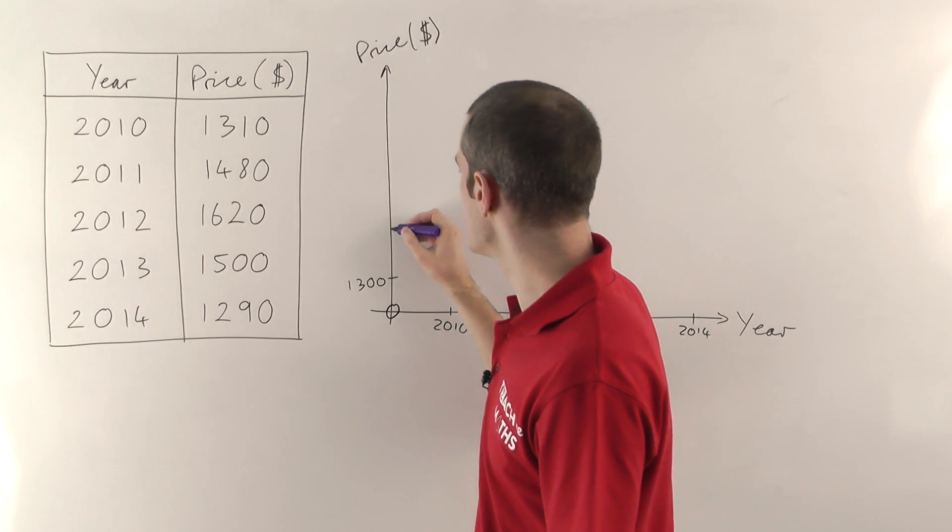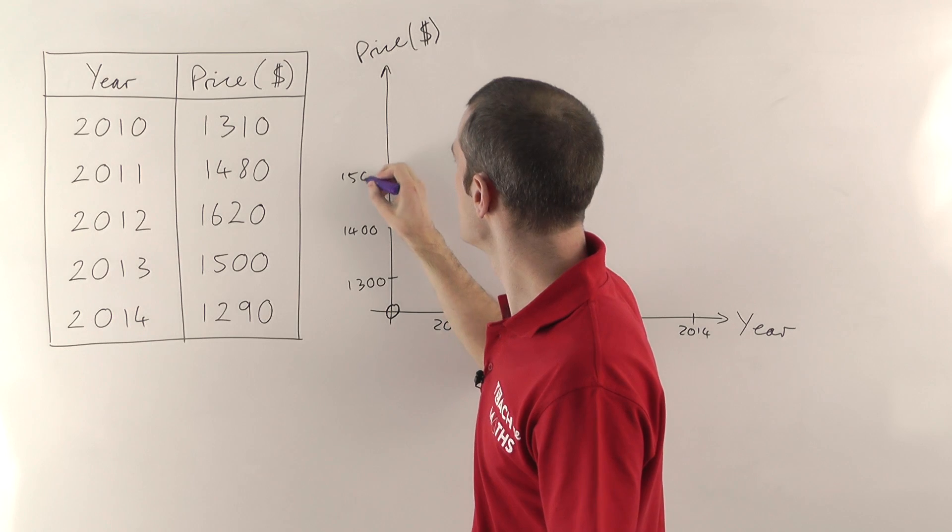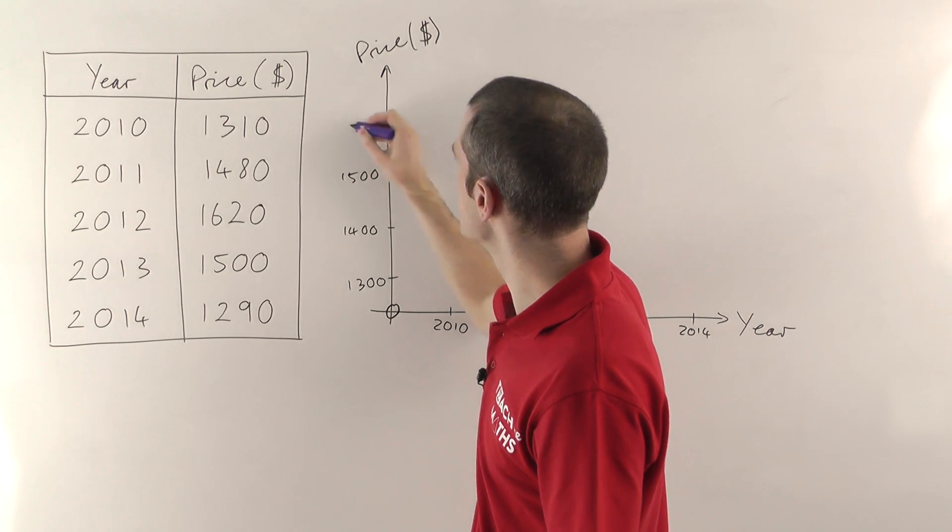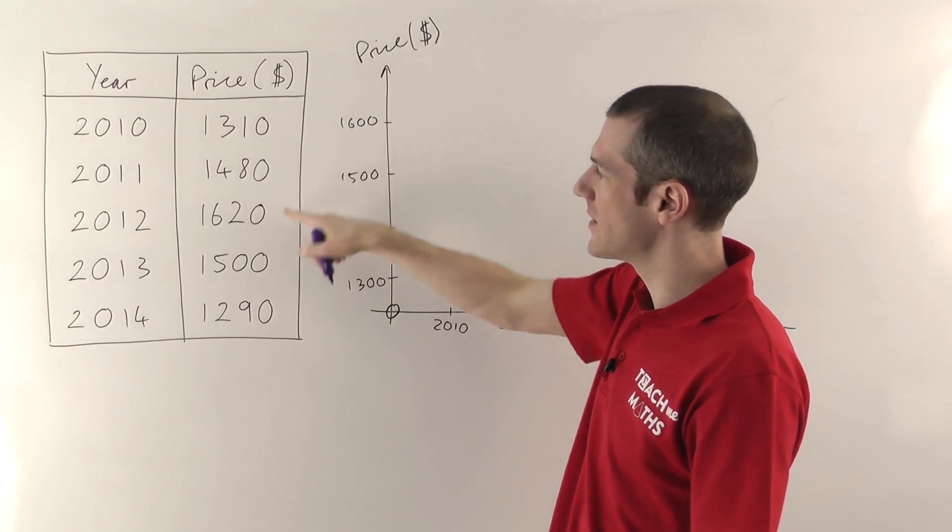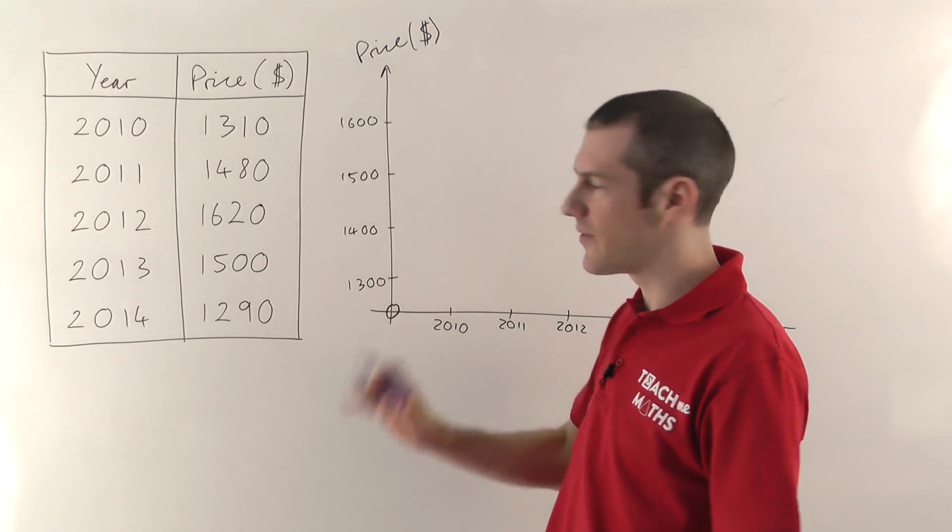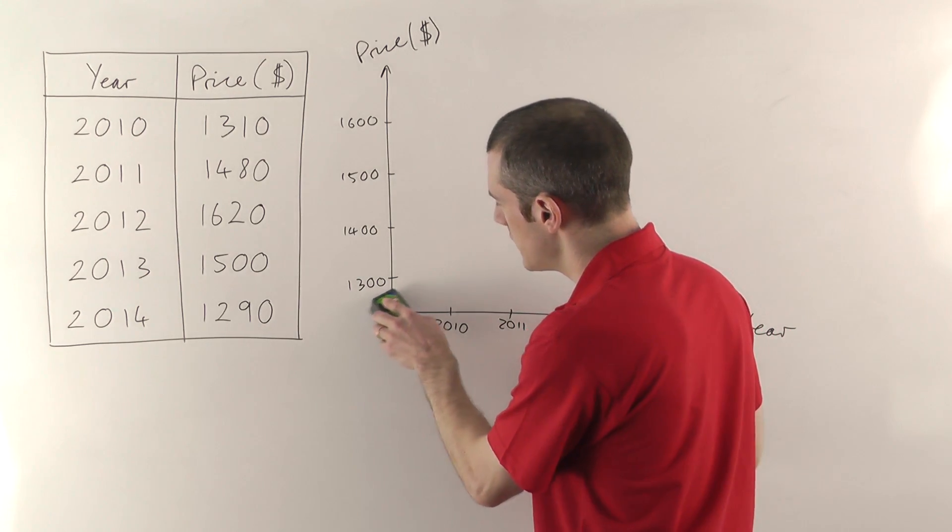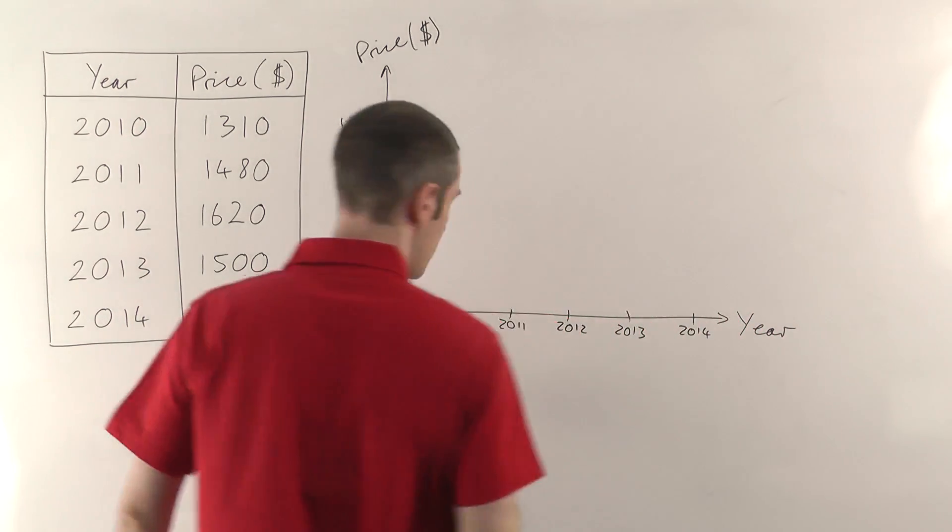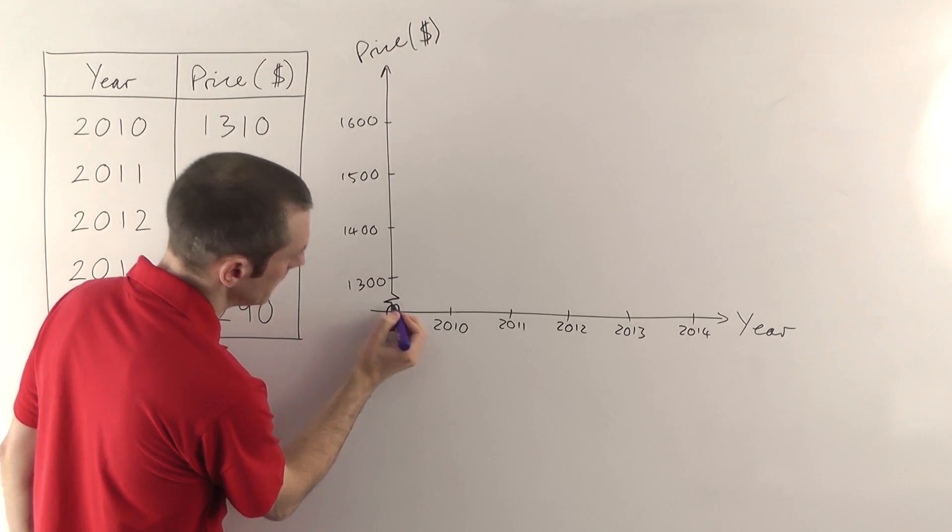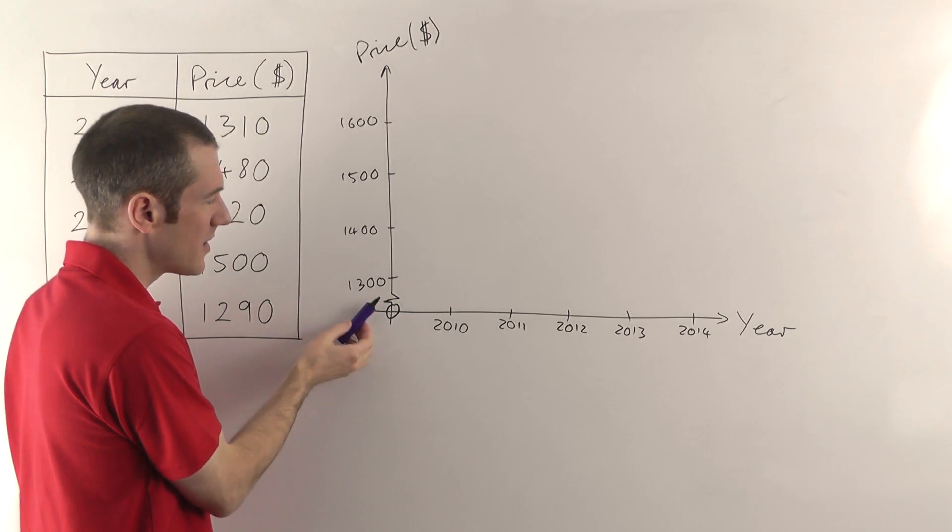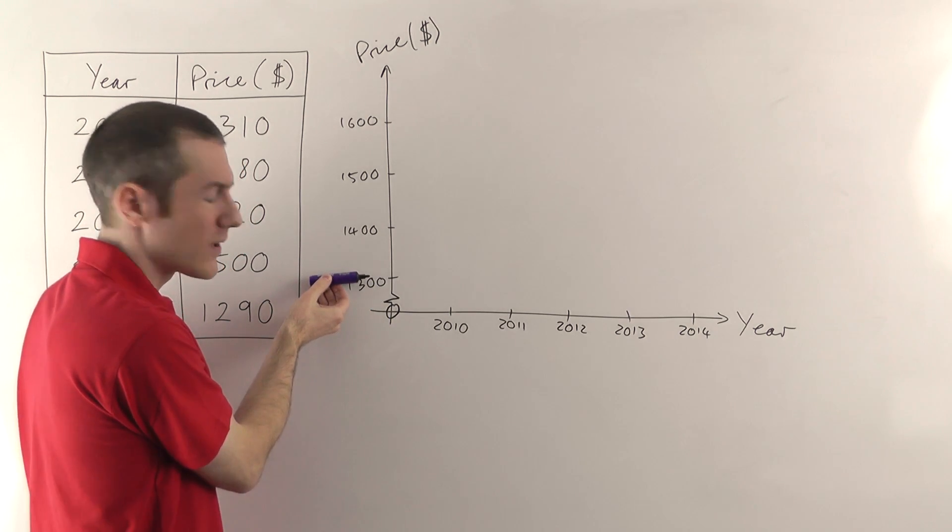So 1,300, 1,400, 1,500 and 1,600 is about as big as it's going to get. That should encapsulate everything. If we go just slightly above that for the 1,620, that should be fine. Now, as I say, because we're not starting at zero, what you can do is if you leave a little gap there and you do like a little lightning symbol. So it kind of looks like that. That's called a discontinuity and it means that there's a gap here. So we start at zero, there's a bit of a gap and then we get to 1,300.